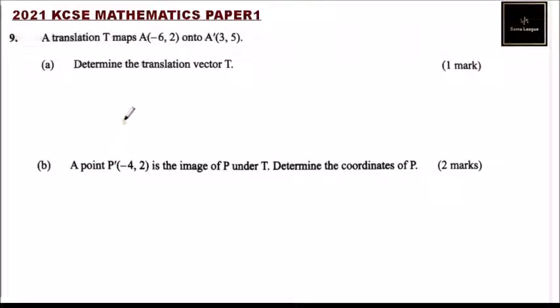Question number 9. A transition T maps A(-6, 2) onto A'(3, 5).